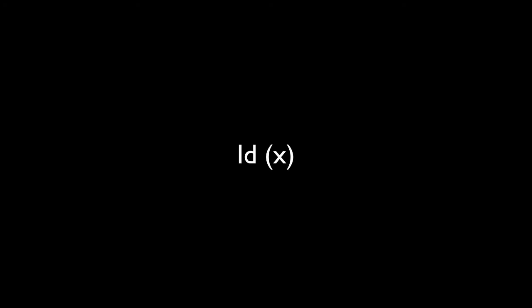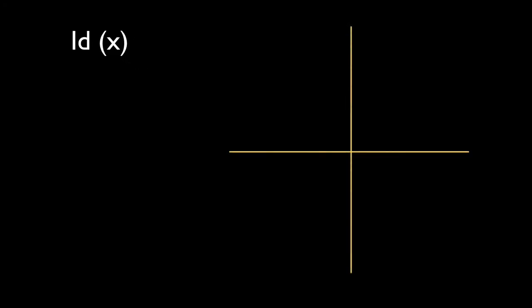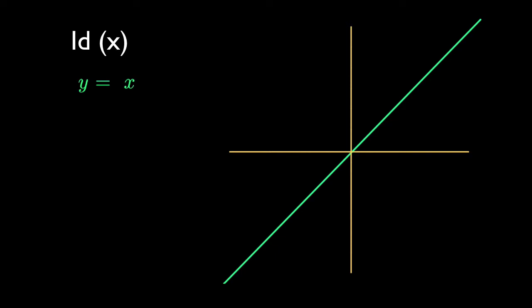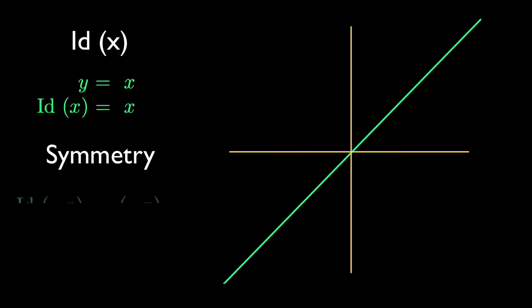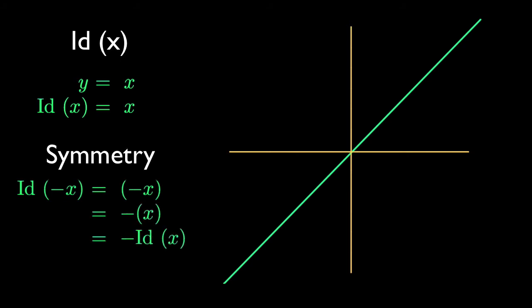Going with the theme of descriptive function names, I'll symbolize this function as id of x. Its equation is y equals x, the line that splits the difference between the x and y axes. Identifying the function with its y value, we have id of x equals x. Its symmetry is obvious, but we'll verify it algebraically, plugging in negative x for x, noting id of negative x is negative id of x, and concluding the id function has odd, or origin, symmetry.